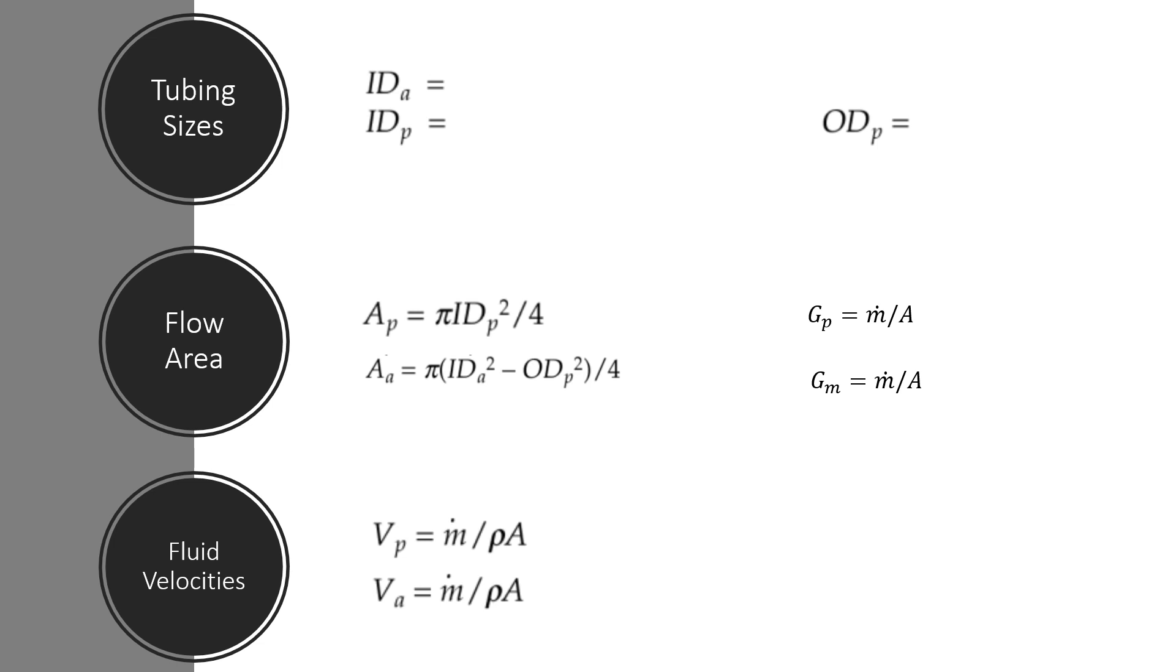Fluid velocities - we have four kinds of velocities: tubular, annular, tubular mass velocity, and annular mass velocities, which will be obtained using these four equations.